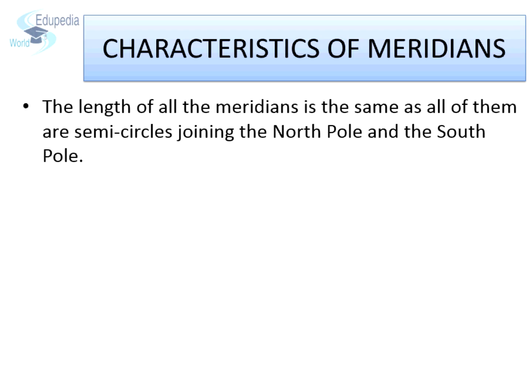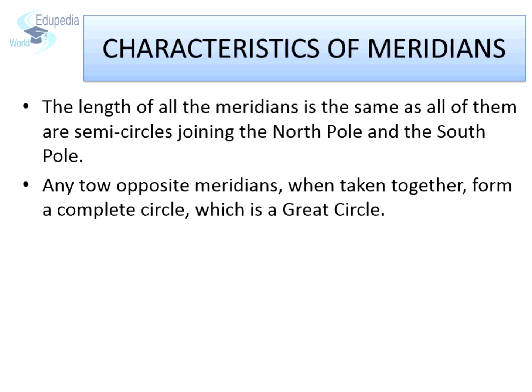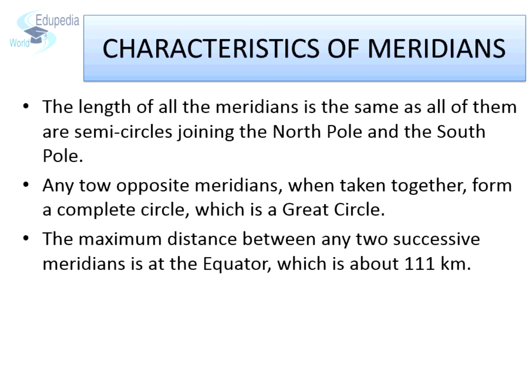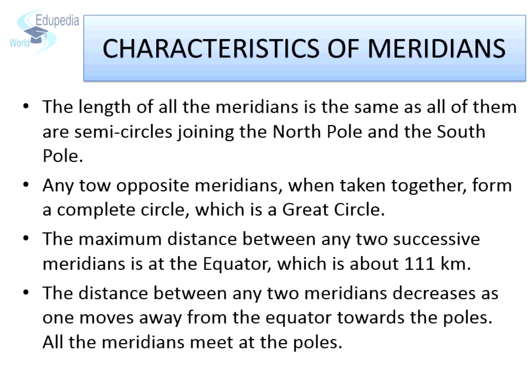The length of all the meridians is the same, as all of them are semicircles joining the north pole and the south pole. Any two opposite meridians, when taken together, form a complete great circle. The maximum distance between any two successive meridians is at the equator, which is about 111 kilometers. The distance between any two meridians decreases as one moves away from the equator towards the poles. All the meridians meet at the poles.